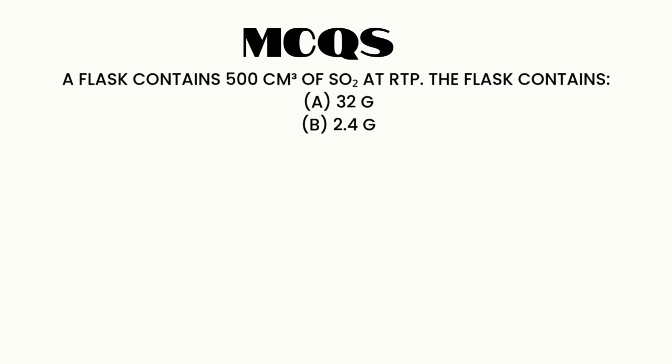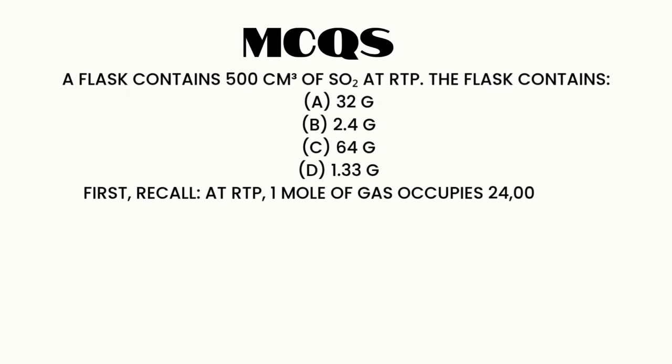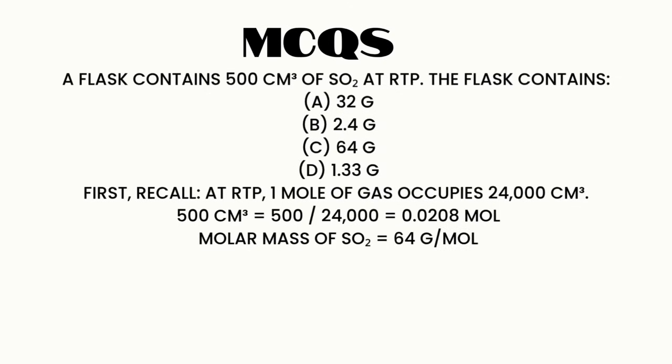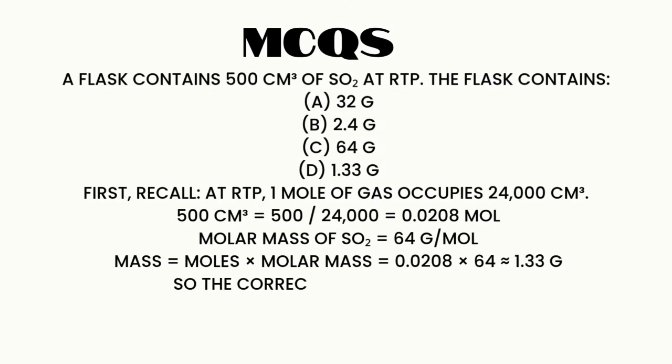Question 2. A flask contains 500 cubic centimeters of SO2 at RTP. The flask contains A. 32G. B. 2.4G. C. 64G. D. 1.33G. First, recall, at RTP, one mole of gas occupies 24,000 cubic centimeters. Molar mass of SO2 equals 64 grams per mole. Mass equals moles times molar mass equals 0.0208 times 64, almost equal to 1.33G. So, the correct answer is D. 1.33G.